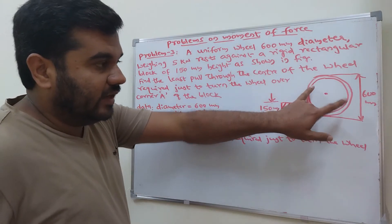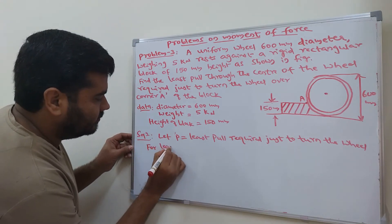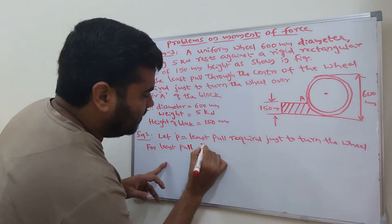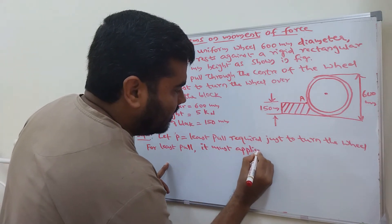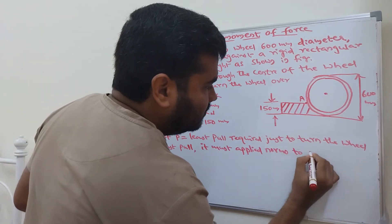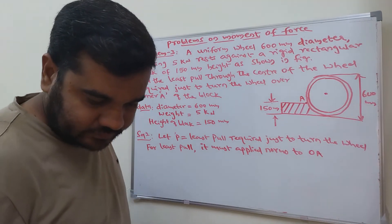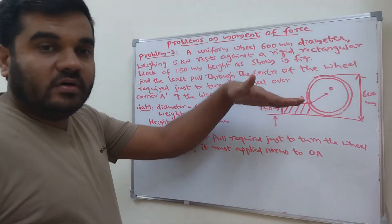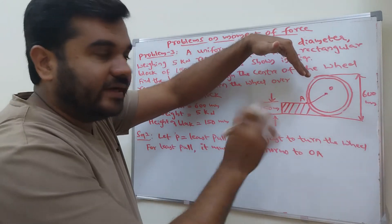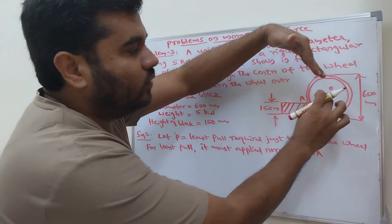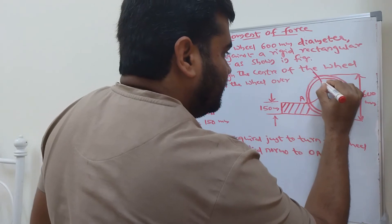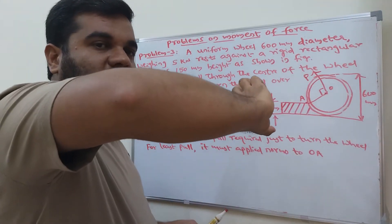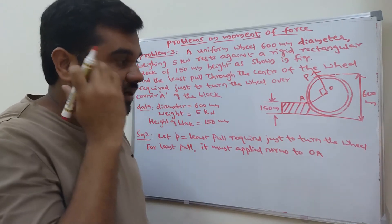For least pull, it must be applied normal to OA. I will explain this one. If you want to pull the least to rotate the wheel, at that time the least pull should be exactly normal to OA - that is, 90 degrees. Then only it is possible to apply a least pull and rotate the wheel. This is the condition.